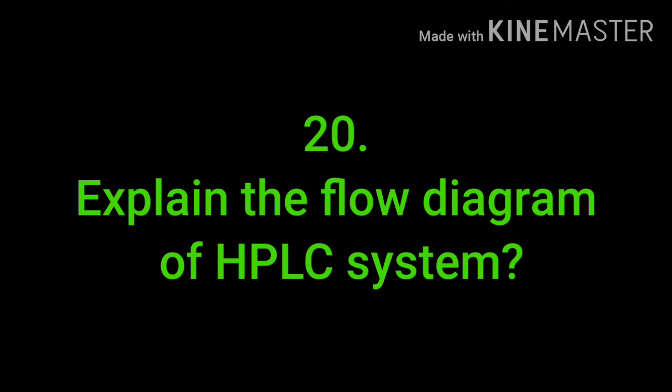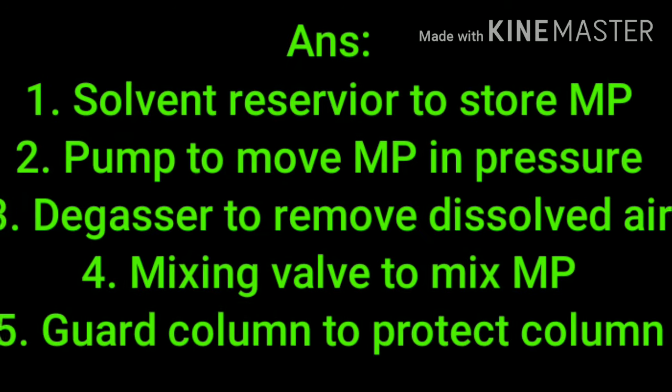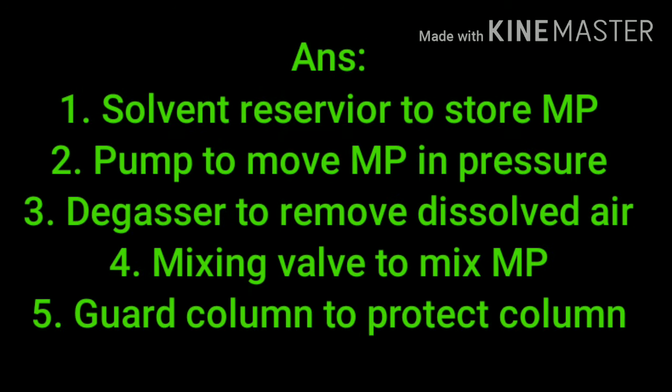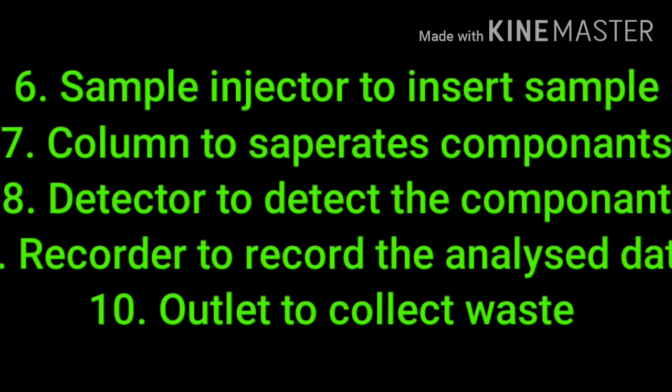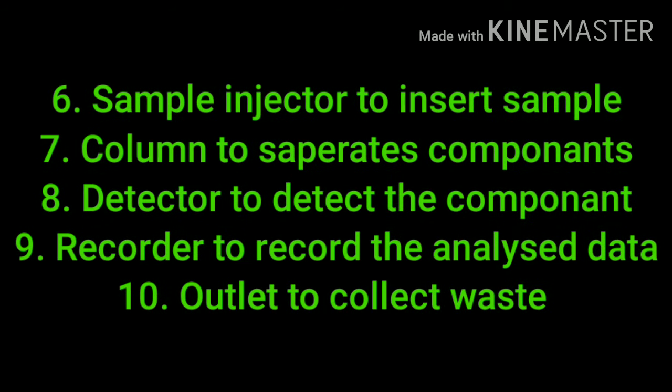Explain the flow diagram of the HPLC system. First is solvent reservoir to store mobile phase. Second is pump to move mobile phase under pressure. Third is degasser to remove dissolved air. Fourth is mixing valve to mix mobile phase. Fifth is guard column to protect column. Sixth is sample injector to insert sample. Seventh is column to separate components.